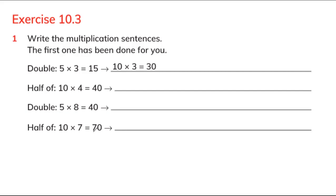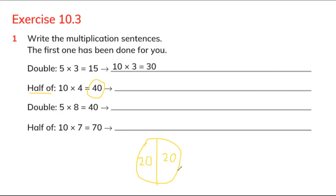Here are four expressions that you need to do with doubles and halves. Half of 40 — what is the half of 40? For example, here is a circle and you need to do half. Half means two parts, so 20 and 20 equals 40 — two parts. So half of 40 is 20.